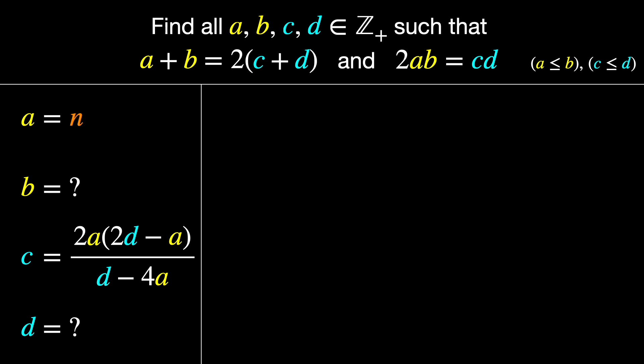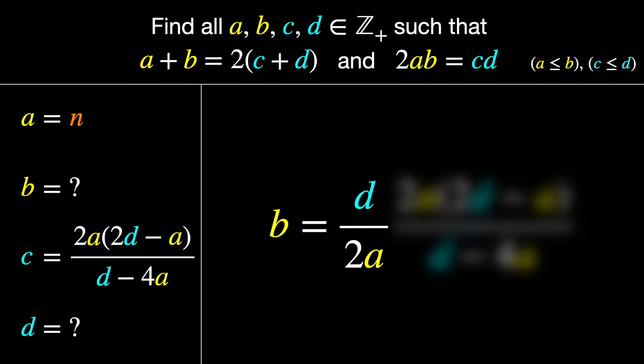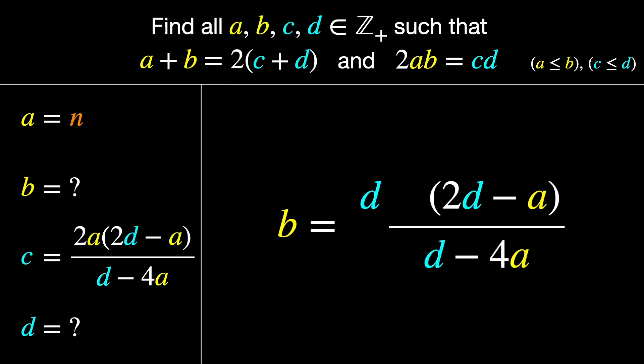We can plug that into the area equation to get a formula for B. Divide by 2a. Substitute our formula for C. And cancel the 2a's. And there it is.